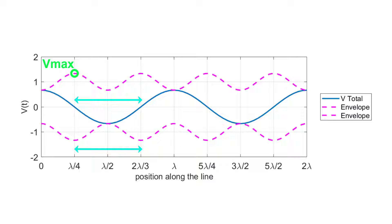If instead we travel half a wavelength from the position of the peak, we end up again in a position where the envelope is at its peak.